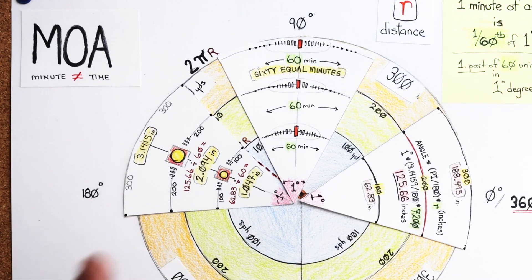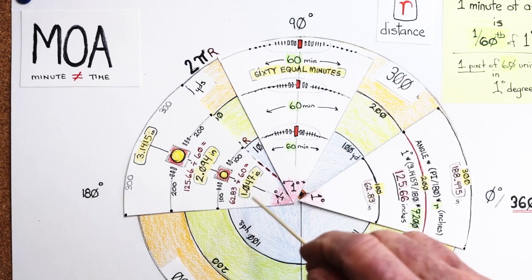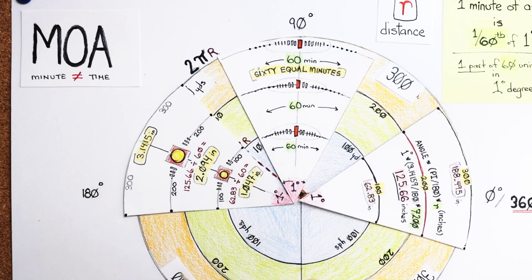1 MOA is always one minute of angle at any distance. 50 yards, 100 yards, 200, 250, 300, 400. 1 MOA is always one minute of angle.